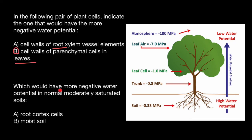And the second question: Which would have more negative water potential in normal moderately saturated soils? Root cortex cells or moist soil?